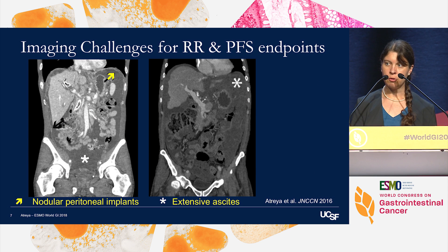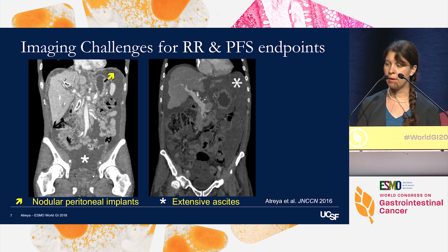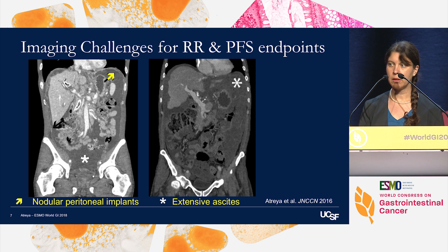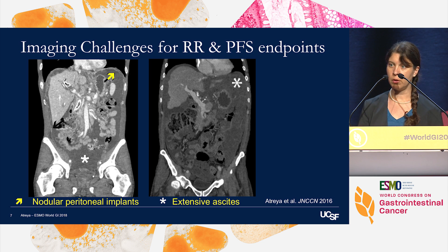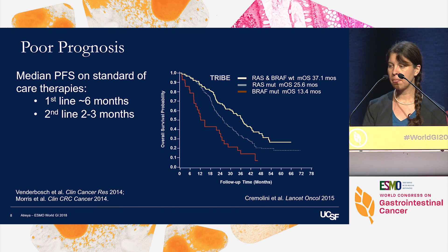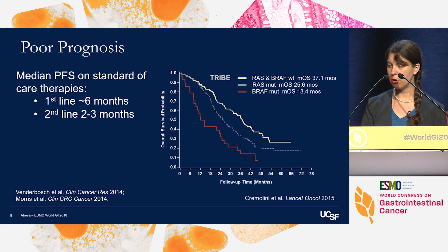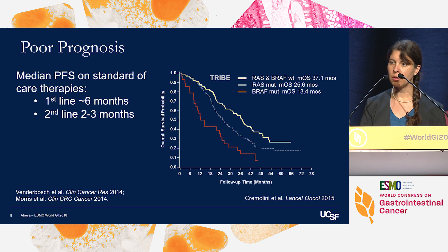This pattern of disease spread poses important challenges for radiographic evaluation of treatment response. Pictured here are two of my clinical trial patients where the bulk of disease was not measurable per RECIST. These tumors are associated with a poor response to standard therapies and a median overall survival of about a year, compared to about three years in patients with BRAF and KRAS wild-type colorectal cancers.